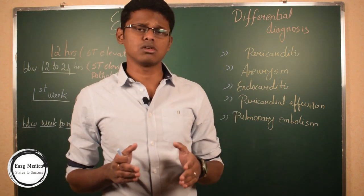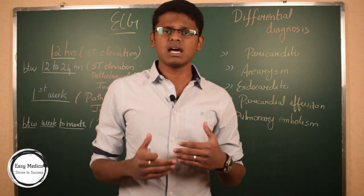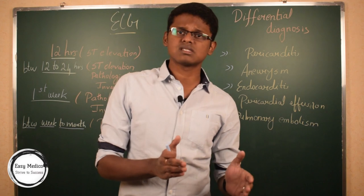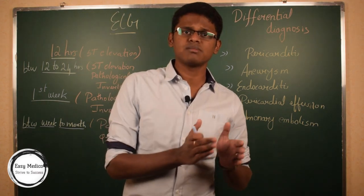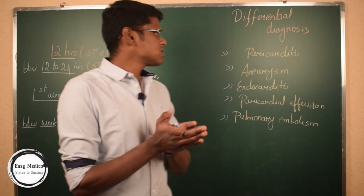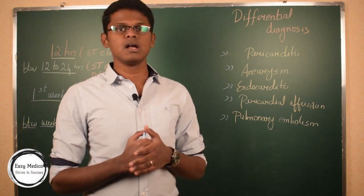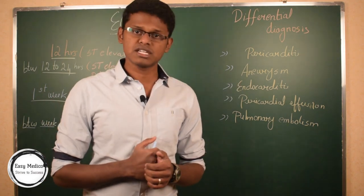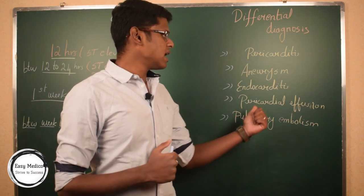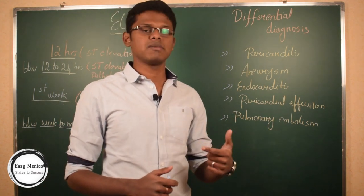Now let's see some differential diagnoses. Some other conditions can present with similar symptoms or pain. To differentiate them, we perform differential diagnostic methods. These diseases include pericarditis — inflammation of the pericardium; aneurysm — dilation of the aorta; endocarditis — infection of the endocardium; pericardial effusion — fluid buildup in the pericardial cavity; and pulmonary embolism — obstruction of the pulmonary artery.